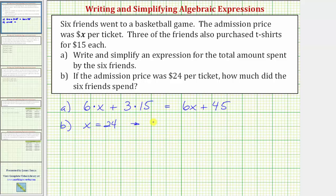Performing the substitution gives us six times 24 plus 45. Now we simplify using the order of operations, and therefore we multiply before adding. Let's find the product of six and 24.